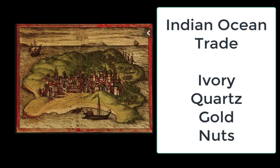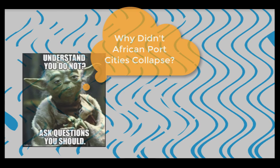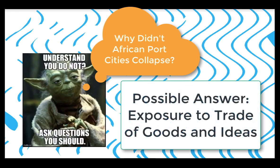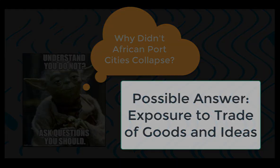Now typically, according to our models, this type of society should have collapsed because they lacked complexity. But they didn't. Why not? A possible explanation is because they were plugged into trade — they could get the surplus of goods they needed from the Indian Ocean trade route.